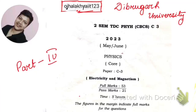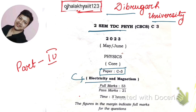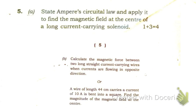Hello friends, this is part four of the solution of Paper Tree C3, De Brugge University, second semester physics major, electricity and magnetism. Today we're going to solve question number five. We have solved up to question four in previous lectures, which are given in the description box. Now let's start solving from question 5a.